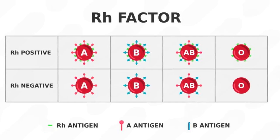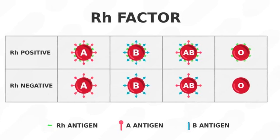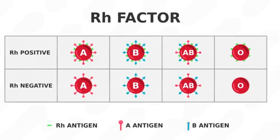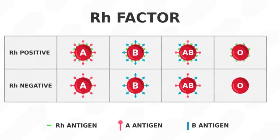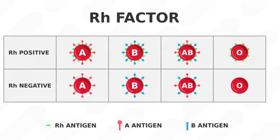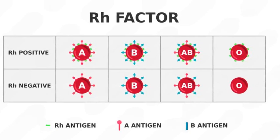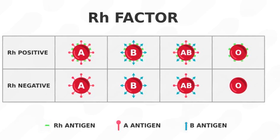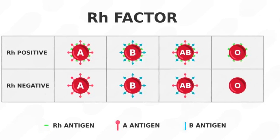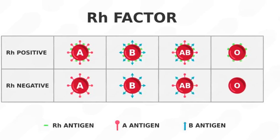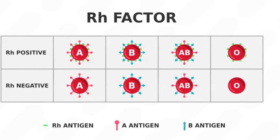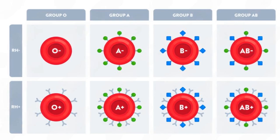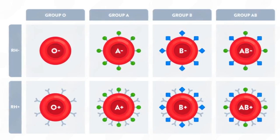Number 4. What is the RH factor? The RH factor is a protein found on the surface of red blood cells. If this protein is present, the blood type is classified as RH positive, and if absent, it is RH negative. The RH factor is inherited and plays a key role in blood transfusions and pregnancy.